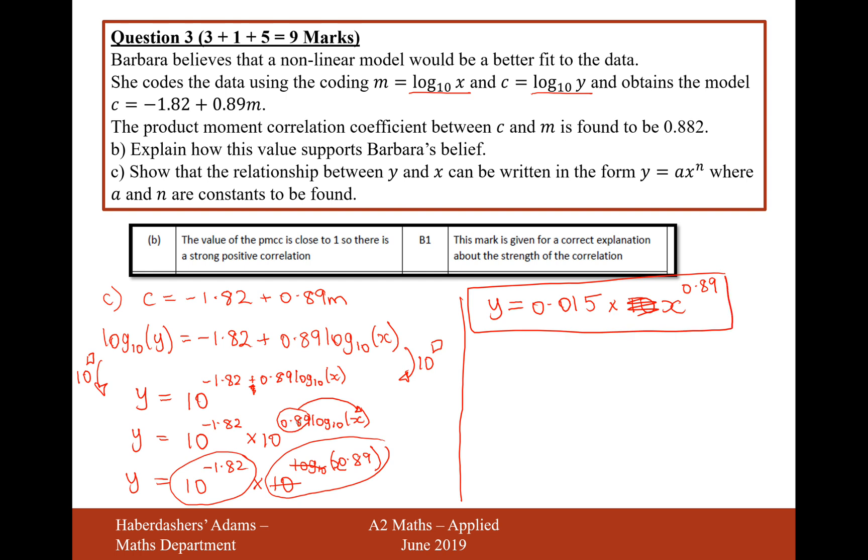So there we are. I moved the 0.89 in as a power on the X, so it's X to the power of 0.89. In fact, let's just rewrite that out. Y equals 0.015 times X to the power of 0.89. So when you cancel out the 10 and the log 10, you just get what's inside your bracket. There we are, that's the answer for the formula in part C. And that's our answer for the whole of question 3, worth 9 marks in total there. Let's now move on to question 4.